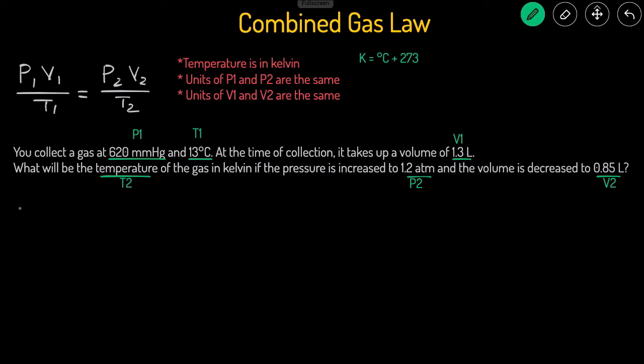For this problem, there's going to be a lot more happening, so I'm going to write all the variables over here. P1 is 620 millimeters of mercury. P2 is equal to 1.2 atm. V1 is equal to 1.3 liters.